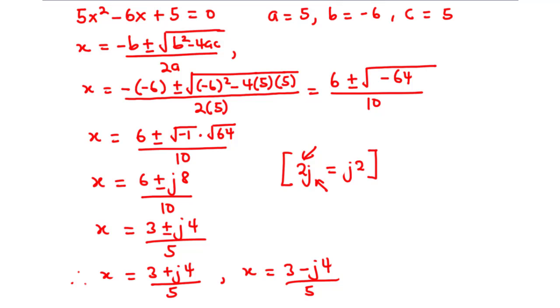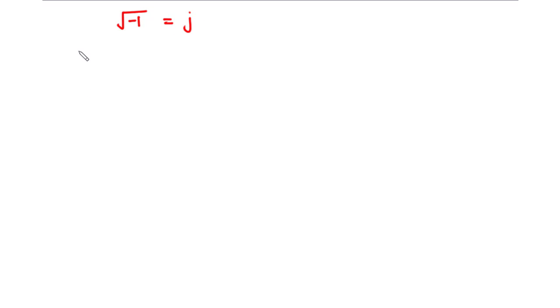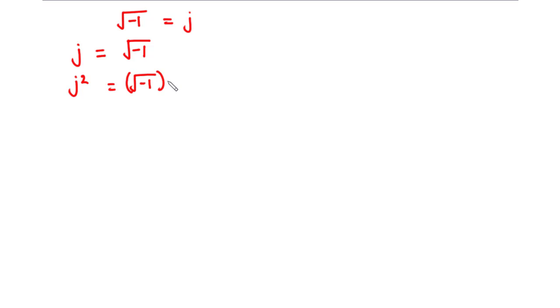Let's move ahead and perform some calculations on the powers of j. We established that the square root of negative 1 is equal to j. So if j equals the square root of negative 1, then j squared equals the square root of negative 1 squared. The square cancels the square root and we have j squared equals negative 1.